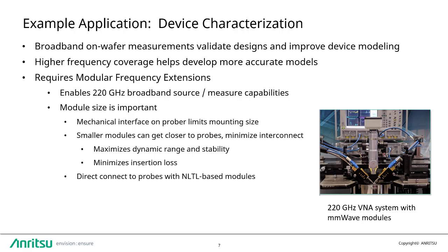Small modules are very important as the area available on a typical wafer prober to mechanically mount the hardware is quite limited. This can be seen in this picture of a VectorStar 220 GHz broadband setup with the small modules and probes set up on a prober.